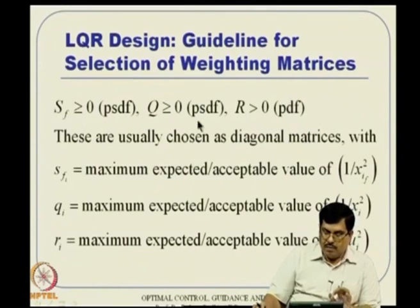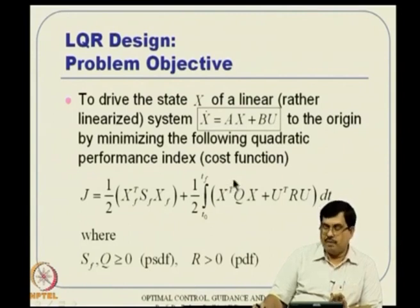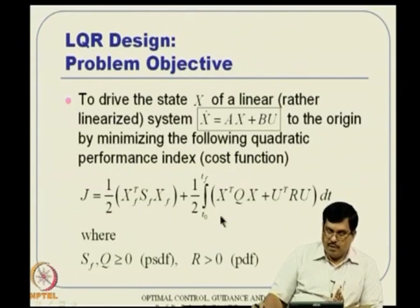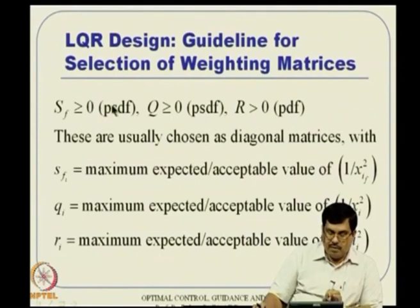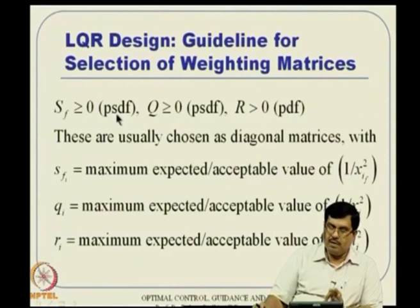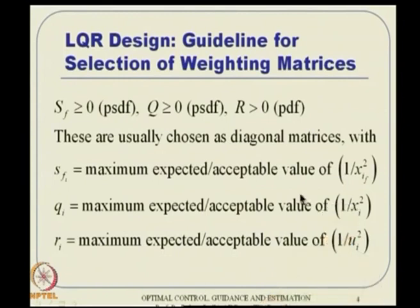One of the ways to select these matrices is to choose diagonal matrices, which is what is most commonly done. Once you select any matrix as diagonal, the diagonal elements are nothing but the eigenvalues. If you put positive elements in the diagonal, it gives you a positive definite matrix. That is the trick — you select diagonal matrices with positive entries.